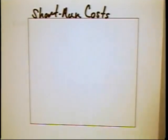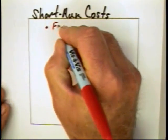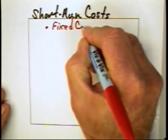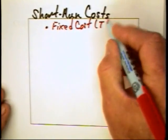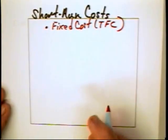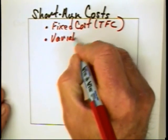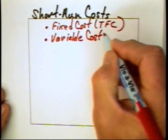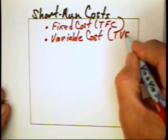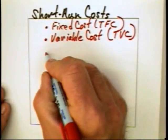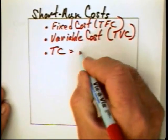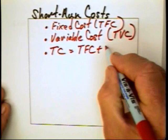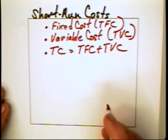This means that in the short run, we can distinguish two types of costs. We have fixed cost — that is, the cost that will not change with the output level — and we're going to define it as total fixed cost (TFC). The other is variable cost, total variable cost, which we will define as TVC. This means that total cost is going to equal total fixed cost plus total variable cost in the short run.